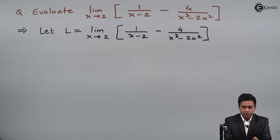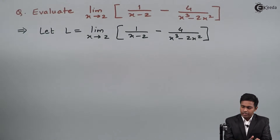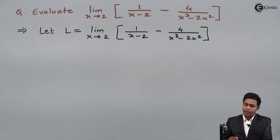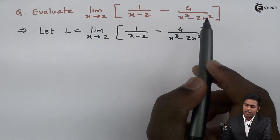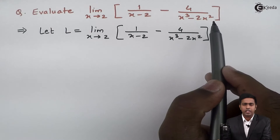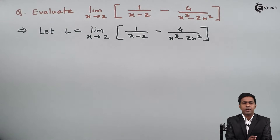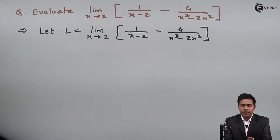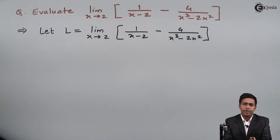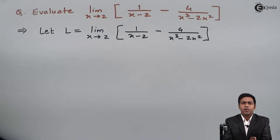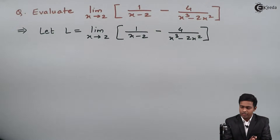Before starting with the solution, let's observe the given function. The given function is an algebraic function. So whenever we have an algebraic function in a limit, we always start with the direct method. So let's start with the direct method.